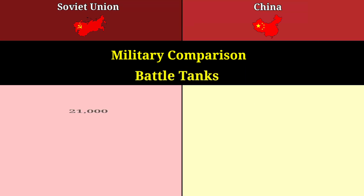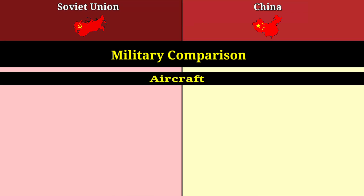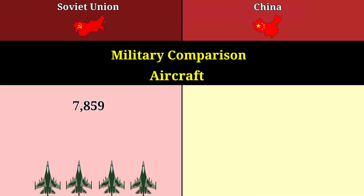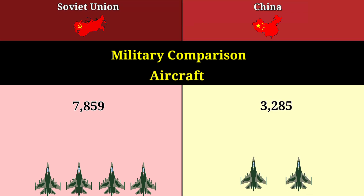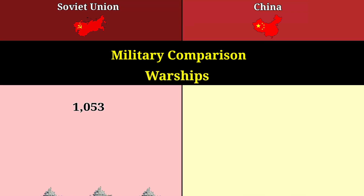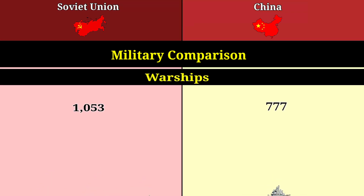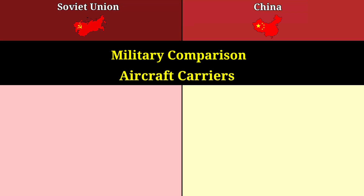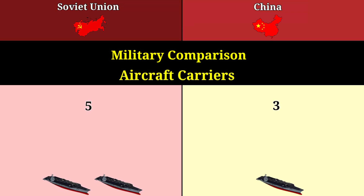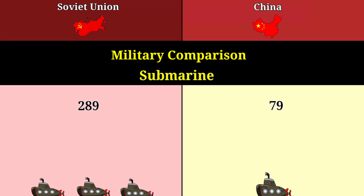Battle tanks: 21,000 for the Soviet Union, 5,250 for China. Aircraft: 7,859 for the Soviet Union, 3,285 for China. Warships: 1,053 for the Soviet Union, 777 for China. Aircraft carriers: 5 for the Soviet Union, 3 for China. Submarines: 289 for the Soviet Union, 79 for China.